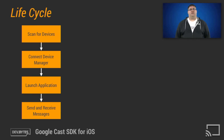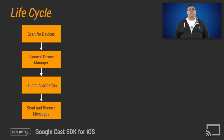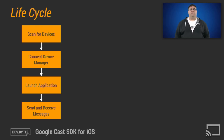Let's start by looking at the lifecycle of an iOS Google Cast sender application. First, you must scan for devices on your network. Once devices are found, the user can select a device for the device manager to connect to. Once connected, you will launch the application. And finally, after the application is launched, you can begin sending and receiving messages.